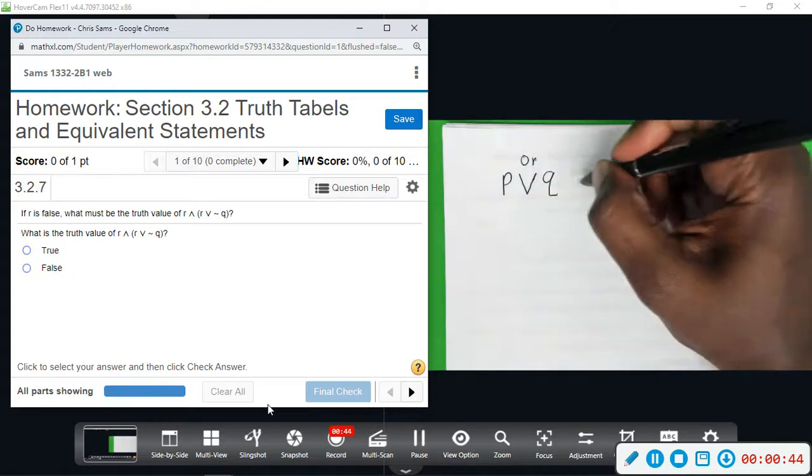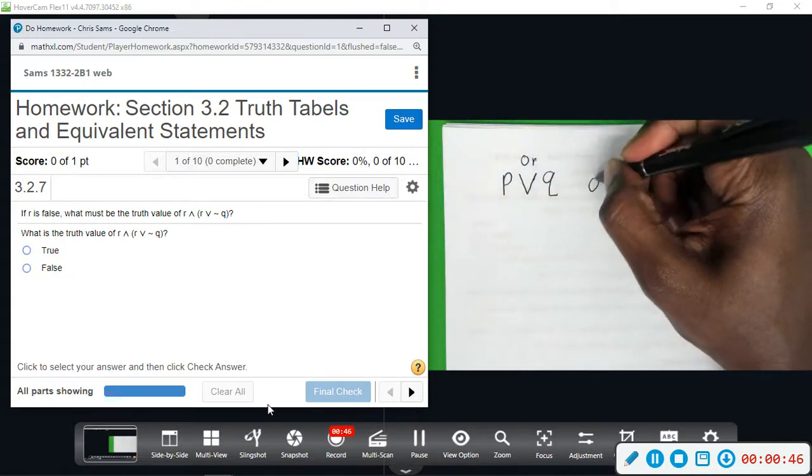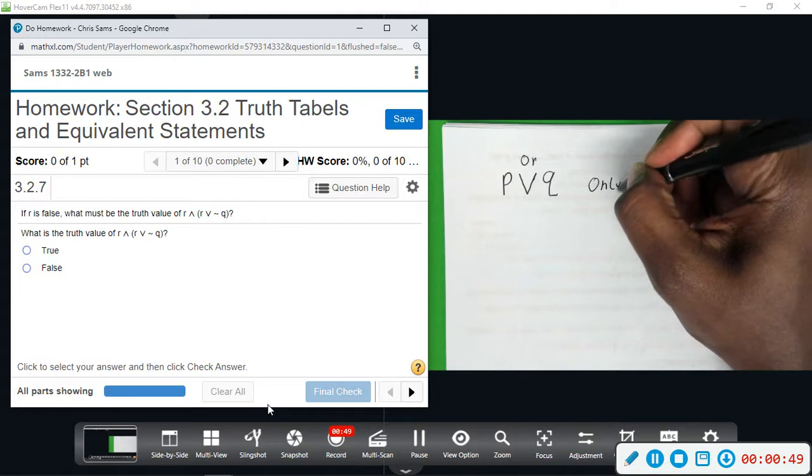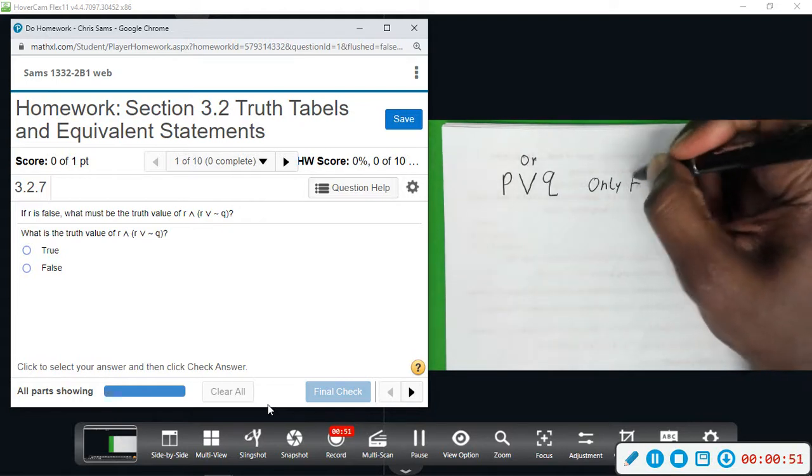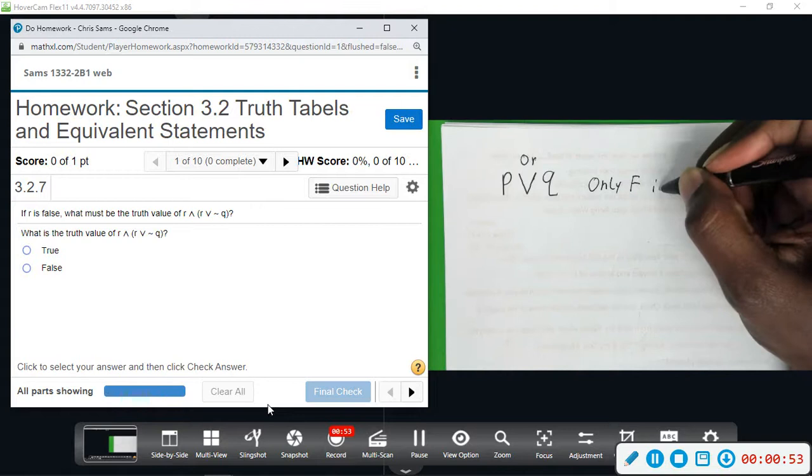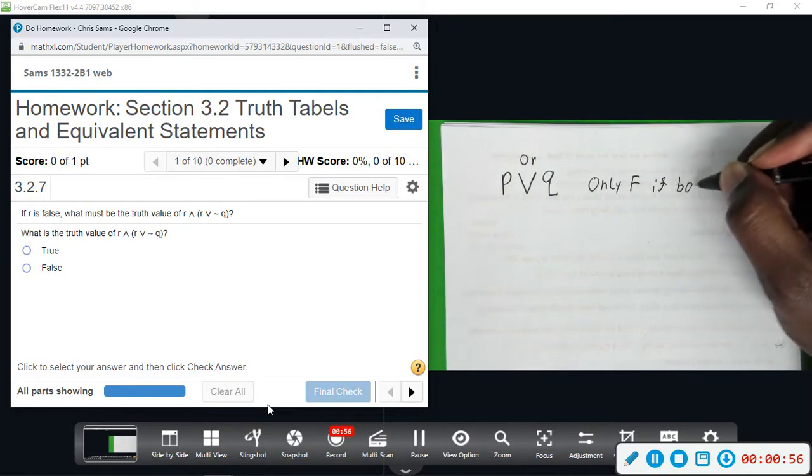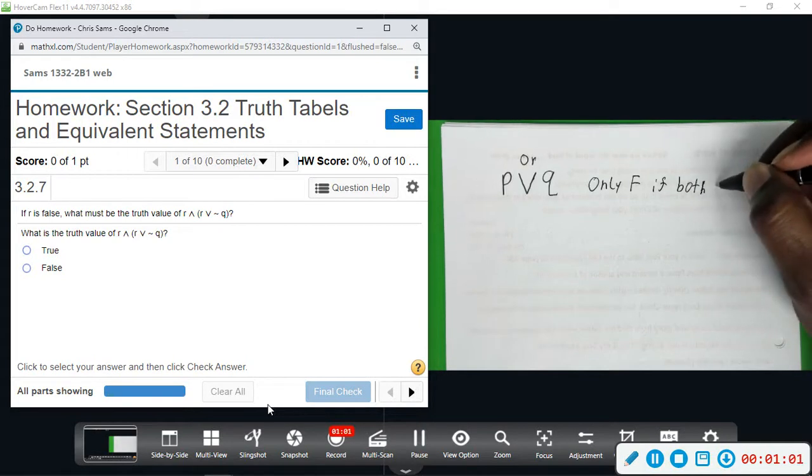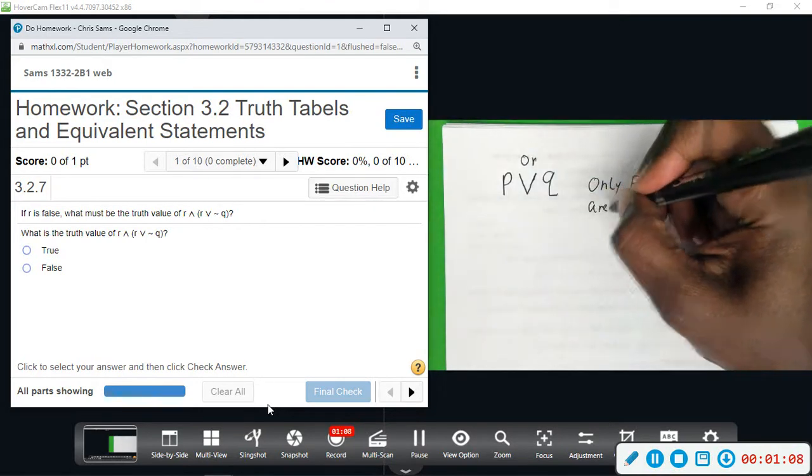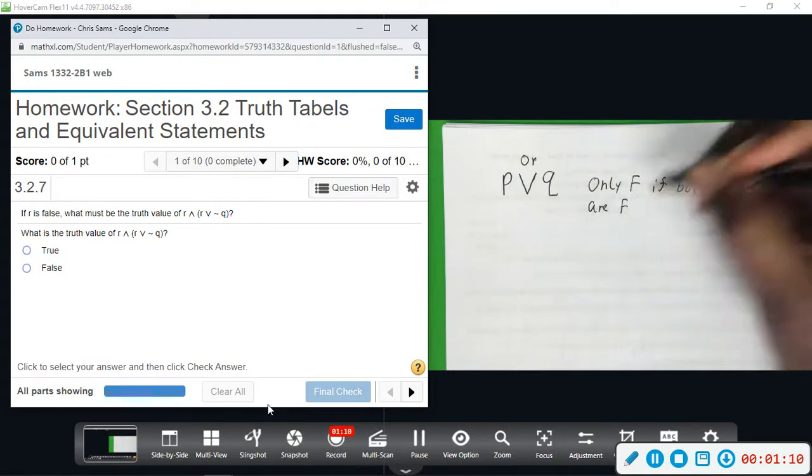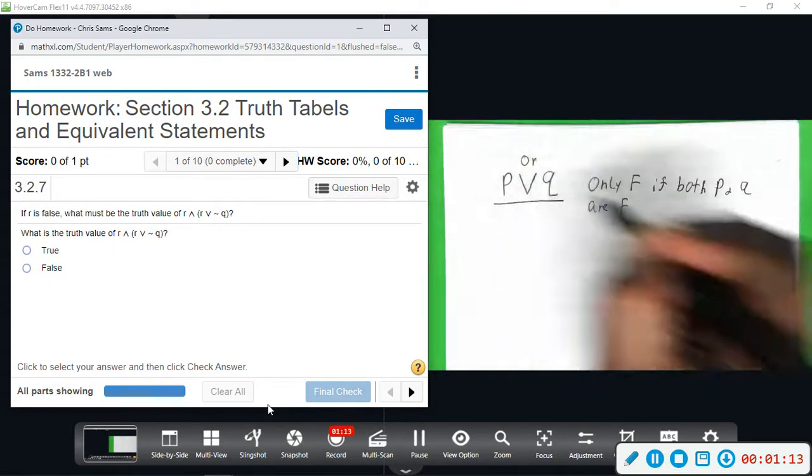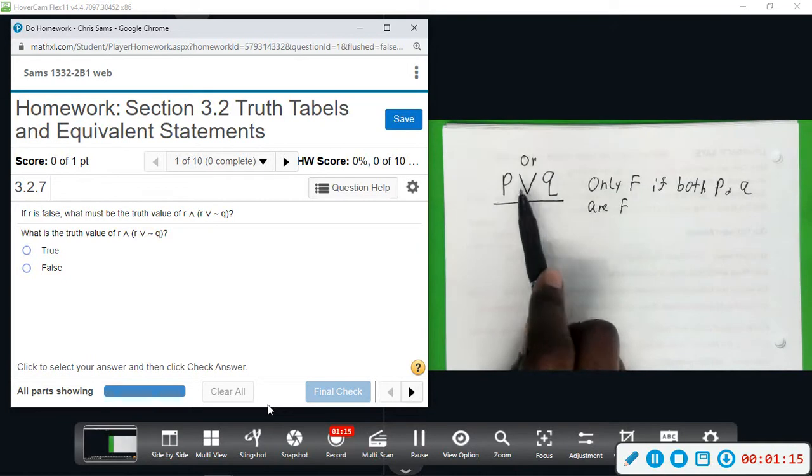This statement is only false if both P and Q are false. So if both statements are false, then an OR statement will be false.